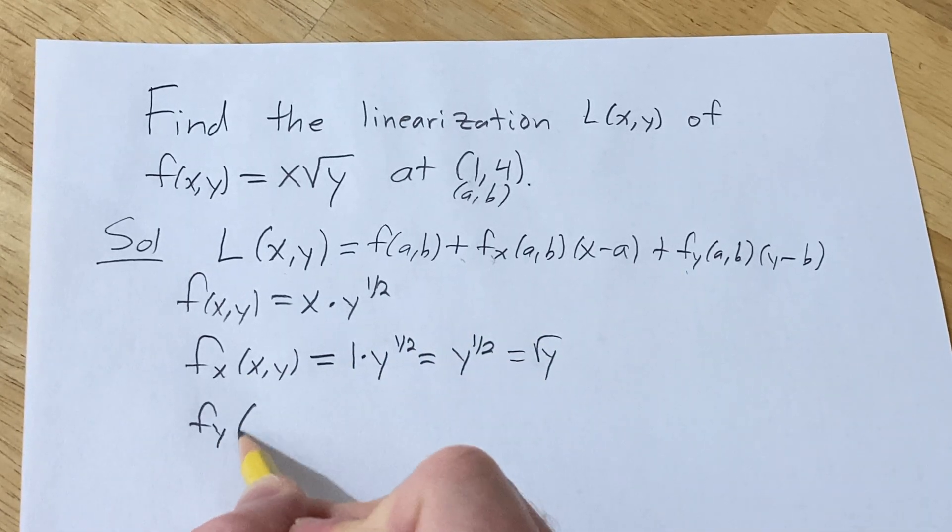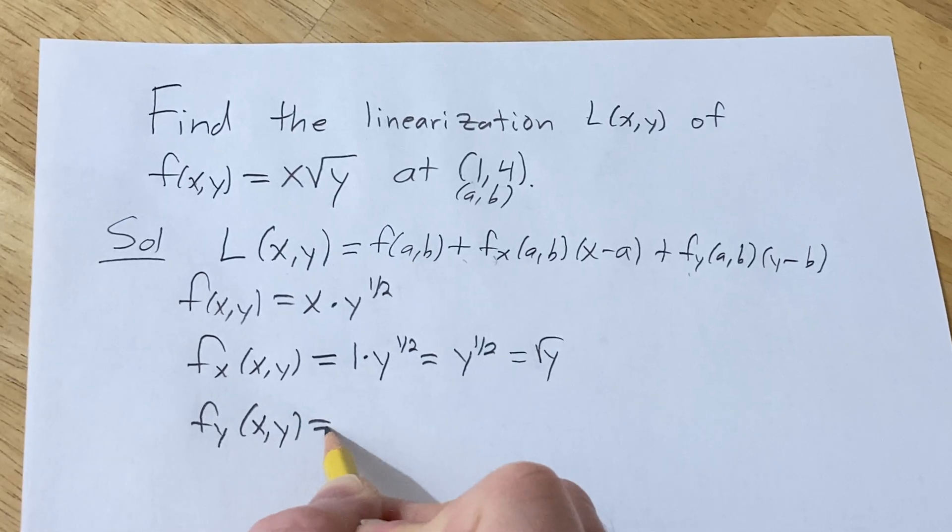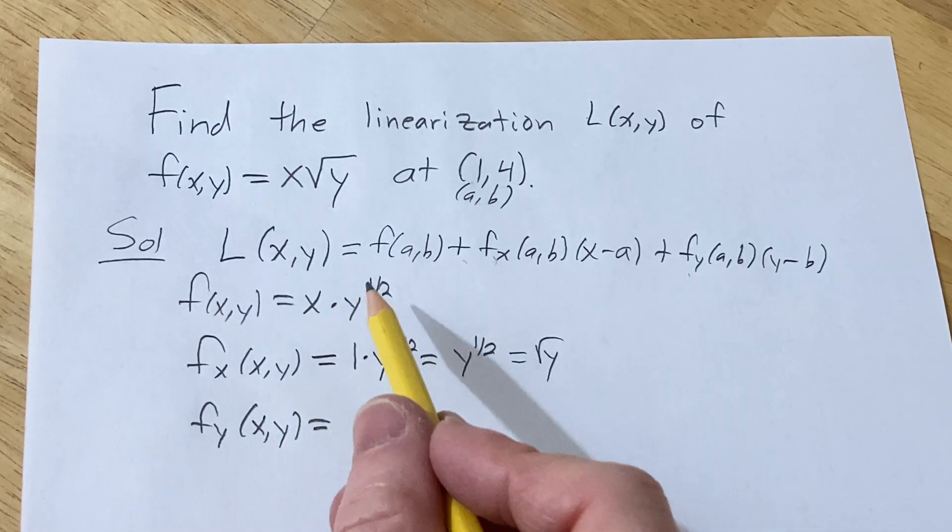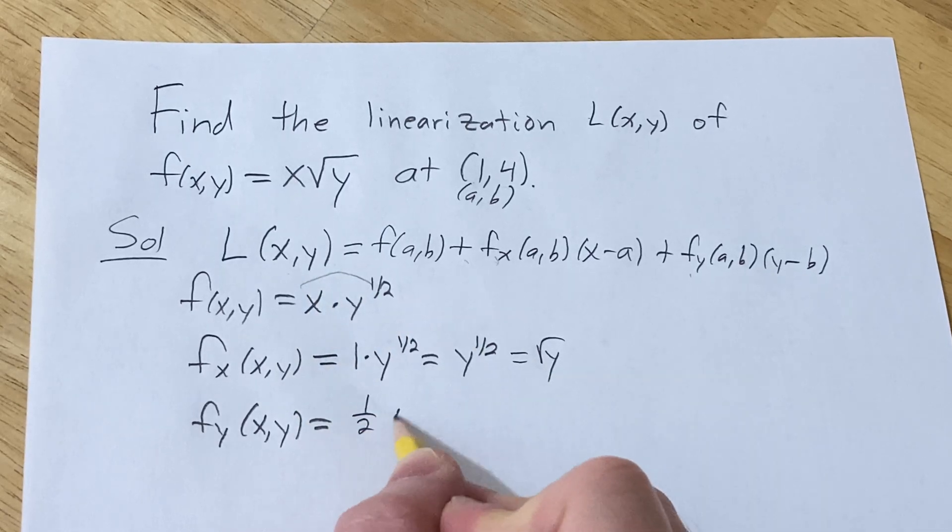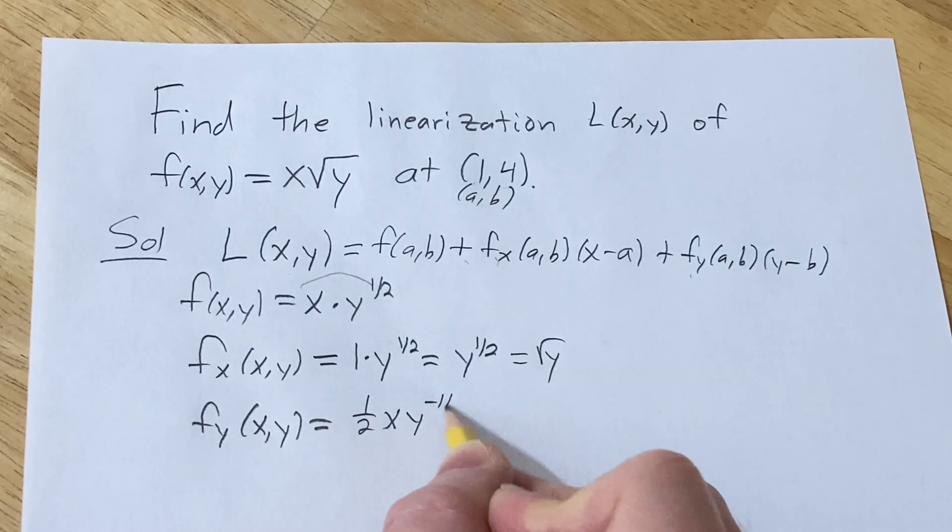And then the partial with respect to y. So in this case the x is a constant. So we bring down the 1/2. The x hangs out. And you subtract 1 from the exponent.